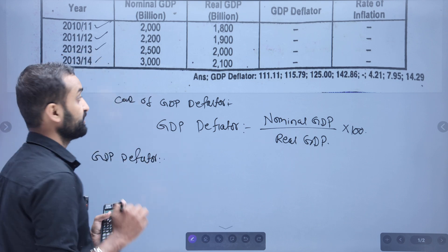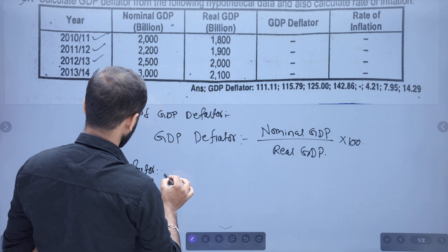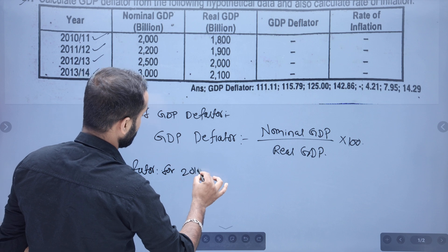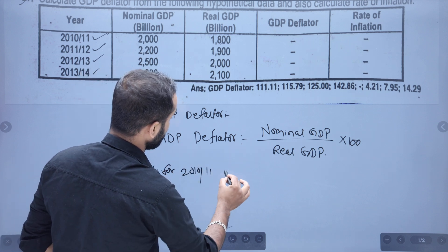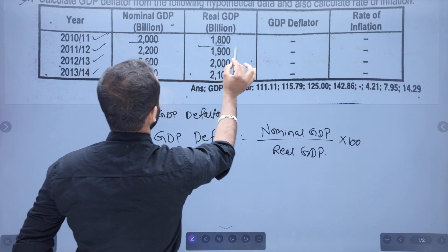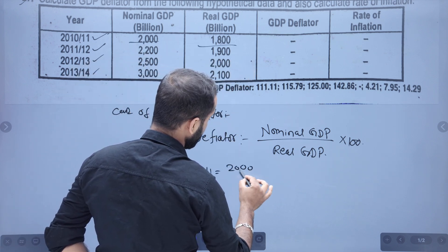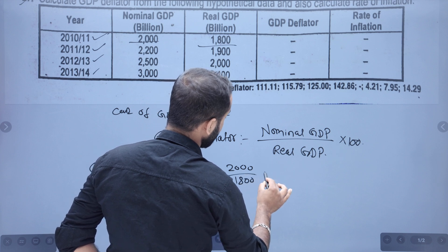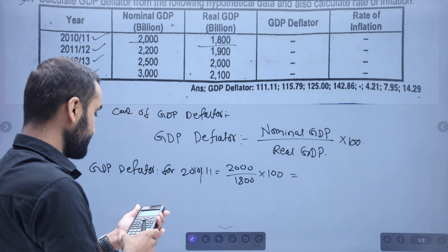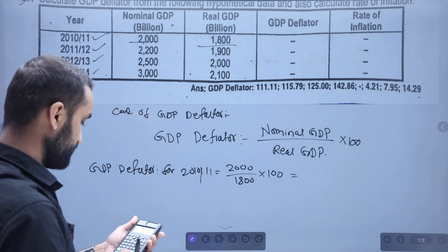We will calculate the GDP deflator for 2010 and 2011. For GDP deflator, we will have 2800 into 100, divided accordingly.